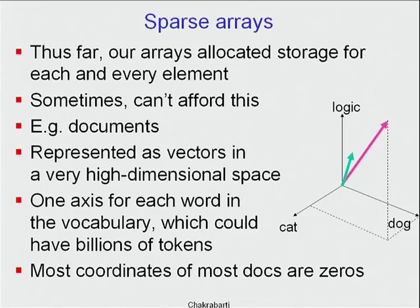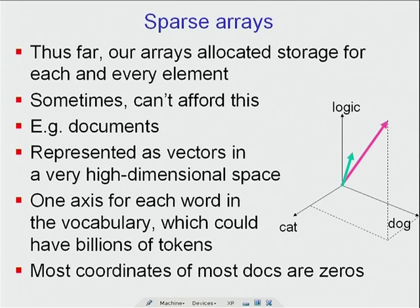Every document is embedded in this billion-dimensional Euclidean space. The coordinate of a document in a given dimension is the number of times that word appears in it. For example, a document saying "you can teach dogs logic but not cats" would have coordinate one each for dog, cat, and logic. Each document is short — a few hundred to a thousand words — so the number of non-zero coordinates is a vanishingly small fraction of all dimensions.